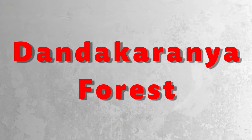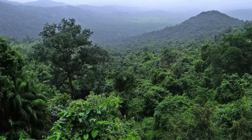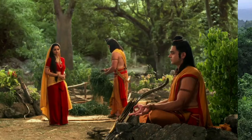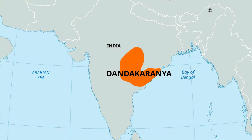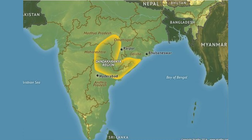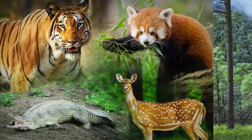Dandakaranya Forest: Dandakaranya is a vast forest in the Ramayana where Rama, Sita, and Lakshmana spent the maximum period of their exile. Located in present-day central and southern India, this thick forest is home to diverse plant species and wild animals.